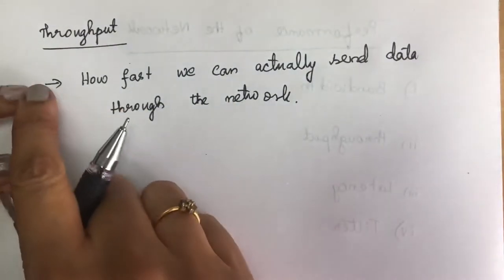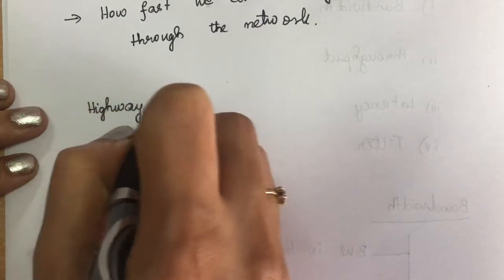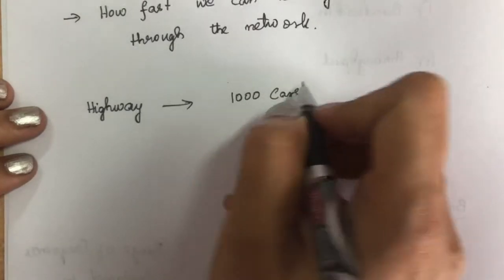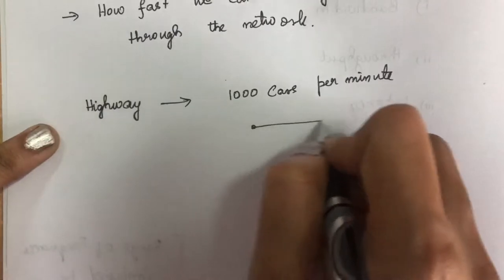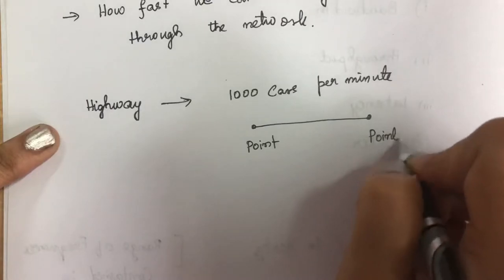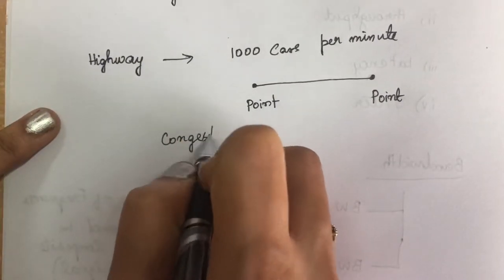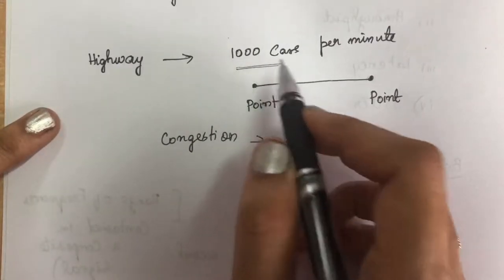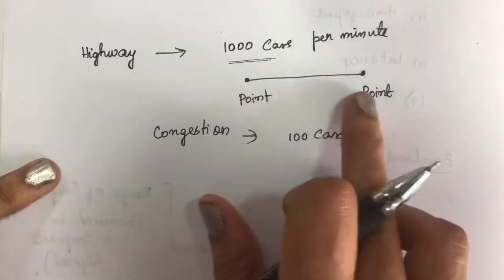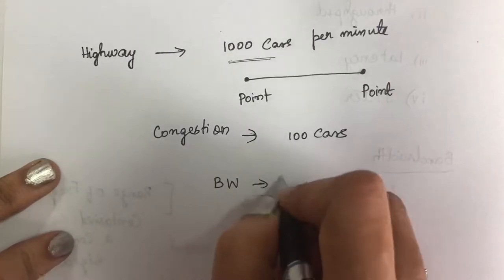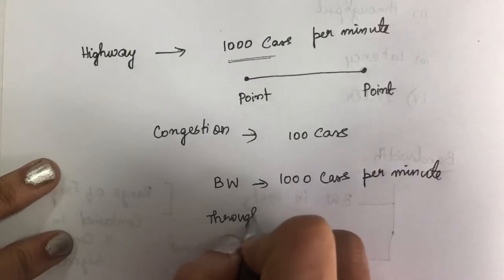To find the difference between throughput and bandwidth, imagine a highway designed to transmit 1000 cars per minute from one point to another. If congestion occurs in between, it has been reduced to only 100 cars. So here the bandwidth is 1000 cars per minute and the throughput is 100 cars.